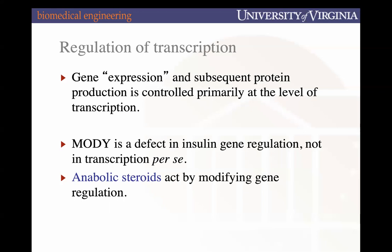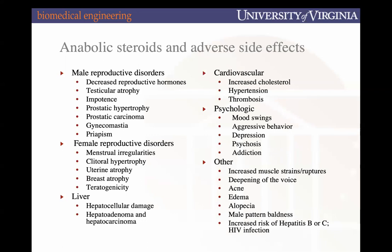Anabolic steroids — anabolic typically means the building up of taking many small pieces and building into something. Catabolism is the process of breaking something down into its smaller subsequent components. So anabolic steroids involve the building up, in this case, of lots of protein. There are lots of side effects that occur as a result of anabolic steroid use across multiple organ systems.